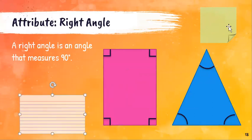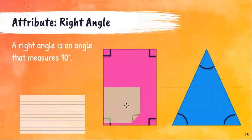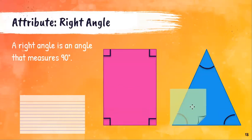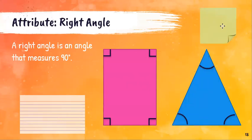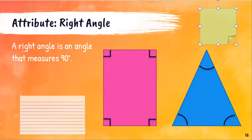You can use a post-it at home, you can use an index card, whatever you have — a sheet of paper, a greeting card — any kind of thing that's a rectangle or a square is going to give you a right angle.